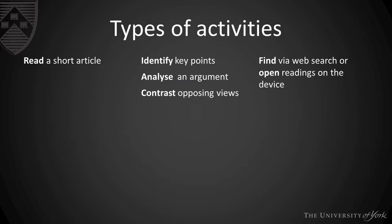So let's have a look at some of the different types of activities. In these three columns we're looking at the basic learning activity, in the middle column the learning objectives, and the last column is the tool or process that will help you achieve that learning objective. The first activity is a very simple process: read a short article. Here you'd say identify the key points, analyse an argument, or contrast the opposing views presented. Using the tablets, students could find an article using web searches or open readings that you've preloaded onto the device.